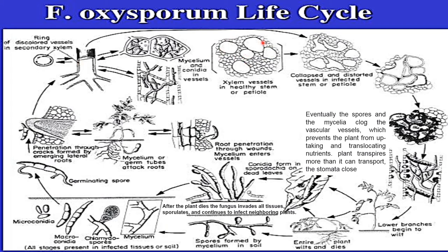Usually the xylem vessels in a healthy stem will appear normal, but when there is an infection, you can see collapsed and discolored vessels in the infected stem. Eventually, the spores and mycelium clog the vascular vessels, preventing the plant from taking up and translocating nutrients. The plant transpires more than it can transport, the stomata start to close, and as a result the lower branches begin to wilt.